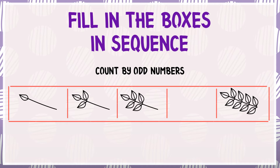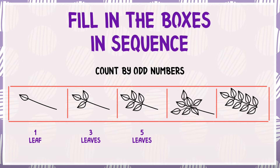1 leaf, 3 leaves, 5 leaves. So next is 7 leaves, then 9 leaves. The pattern increases by 2 each time.